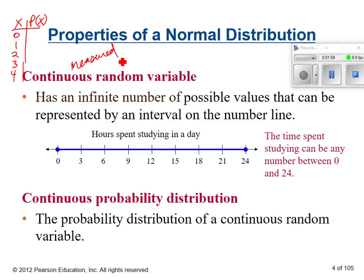They have to be measured. Something like ounces of water in a cup, weight of a person or whatever, because it's not something that just always falls on a whole number. The example I use here: time spent studying. Somebody might study for an hour and 10 minutes, somebody else for an hour and 12 minutes, hour and 13, hour and 14. So it's not something we can break down into just 0, 1, 2, 3, or 4.